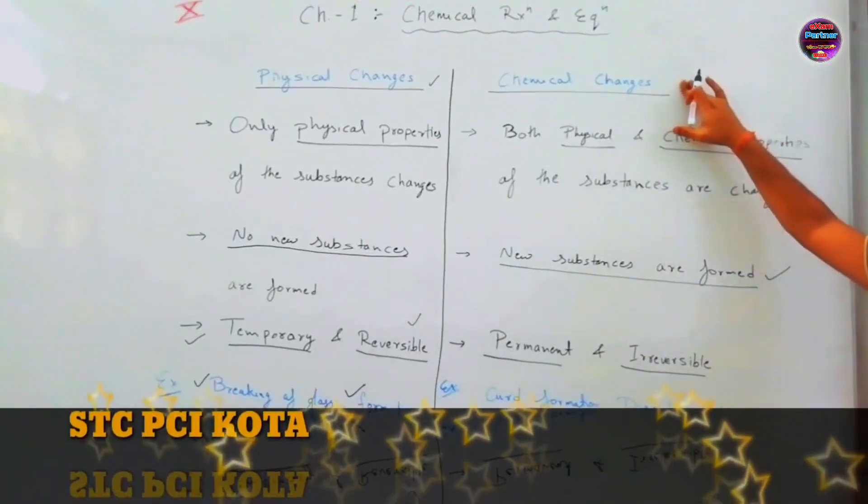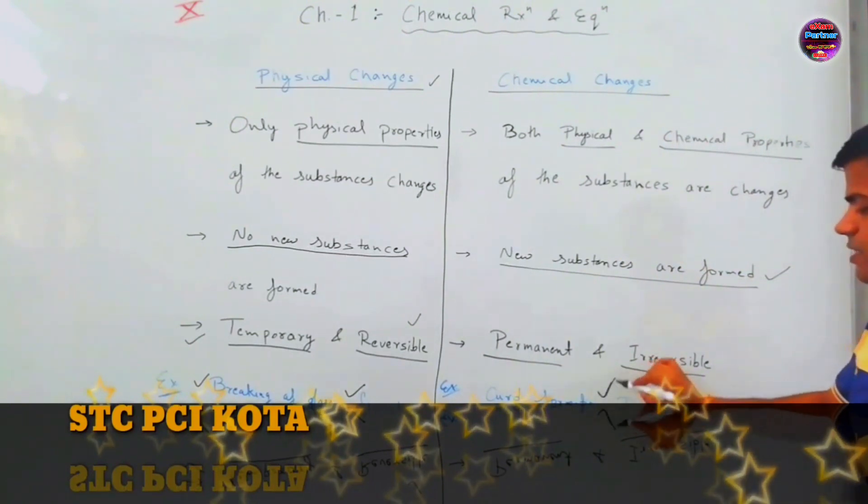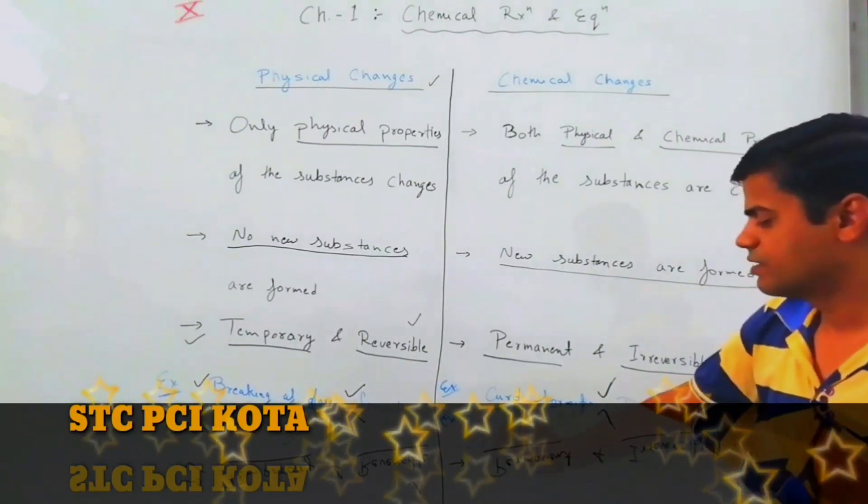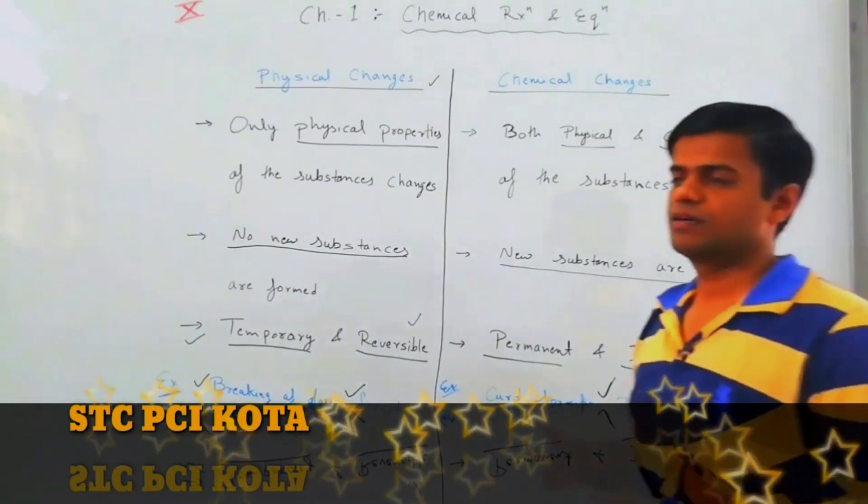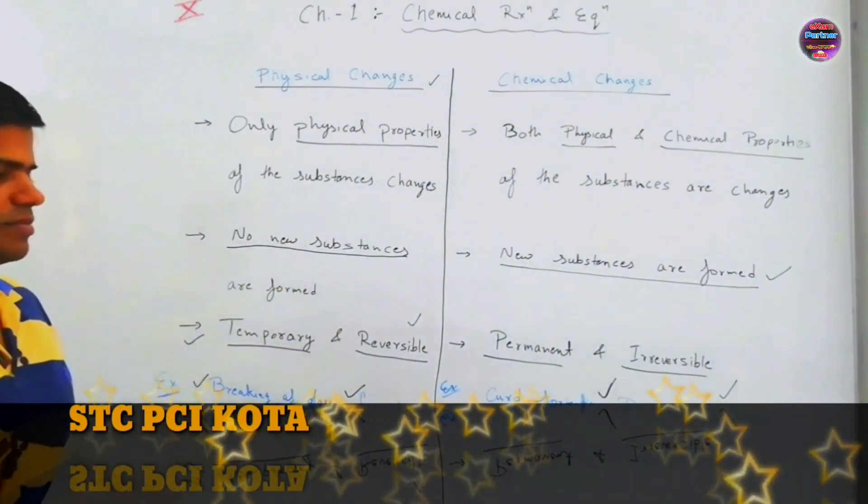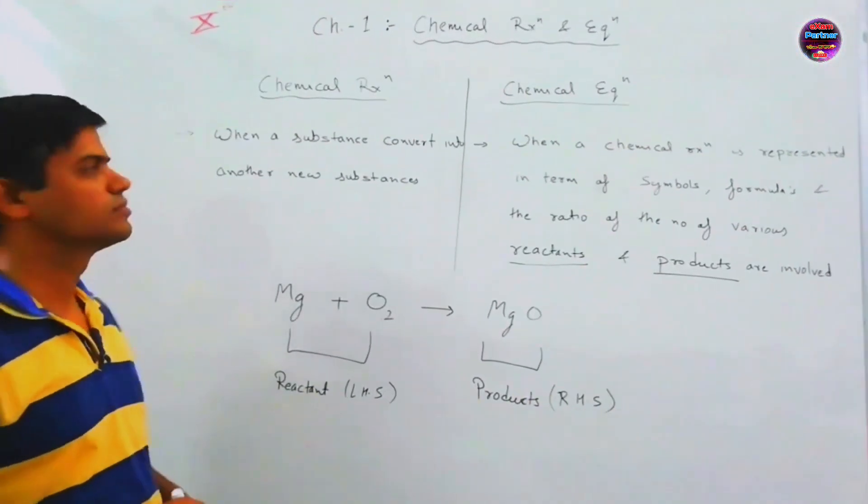And chemical changes. For example, formation of curd, milk to curd, digestion of food which is irreversible, rusting of iron which is also irreversible, growth of trees which is irreversible, cutting of waste which is also irreversible.